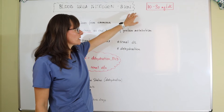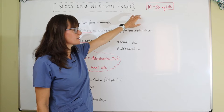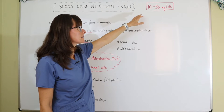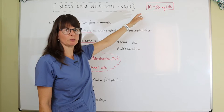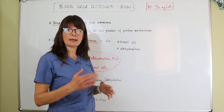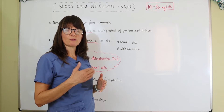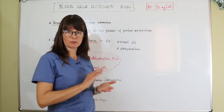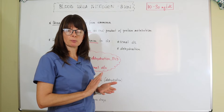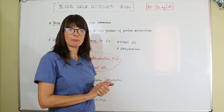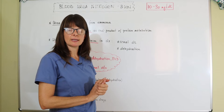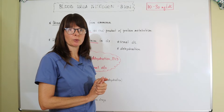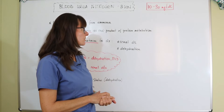The reference range typically is 10 to 30 milligrams per deciliter, but it all depends on whatever lab reference range you're working with. Make sure that you check the reference range from the particular lab that is processing the blood work from the patient.